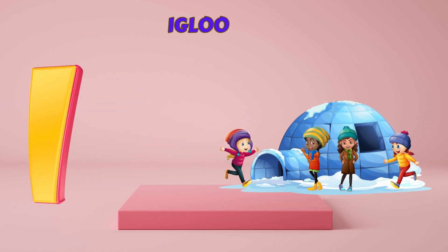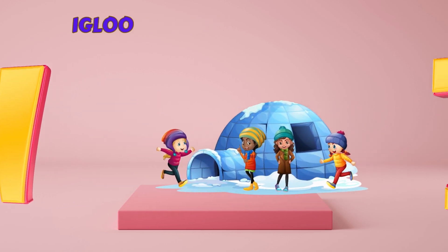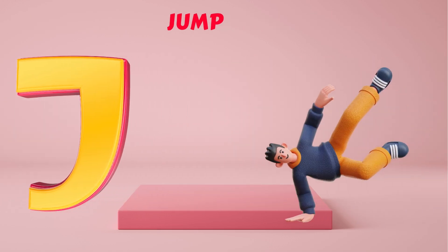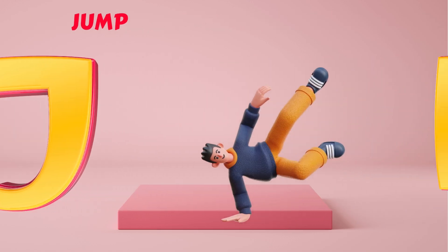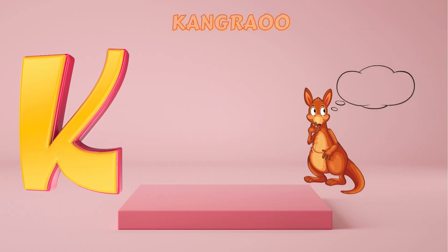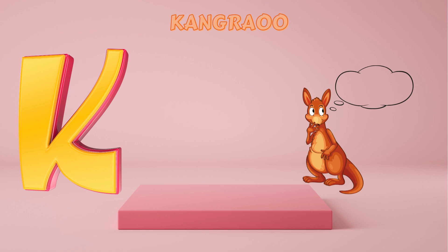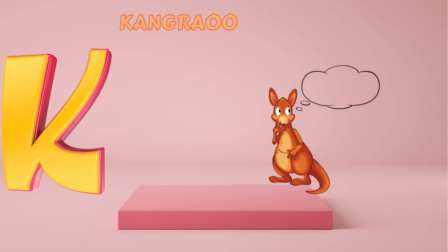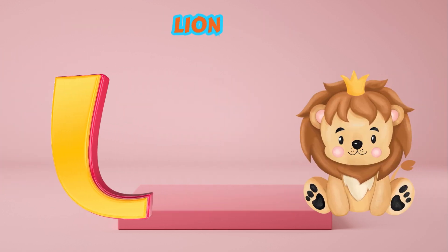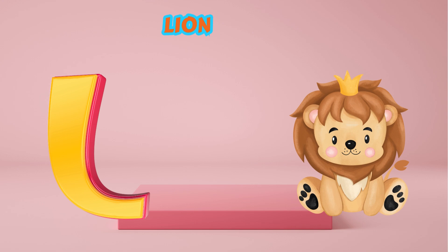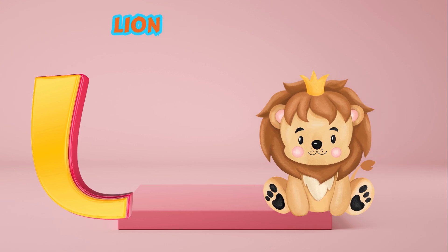I is for Igloo. I-I-Igloo. J is for Jump. J-J-Jump. K is for Kangaroo. K-K-Kangaroo. L is for Lion. L-L-Lion.